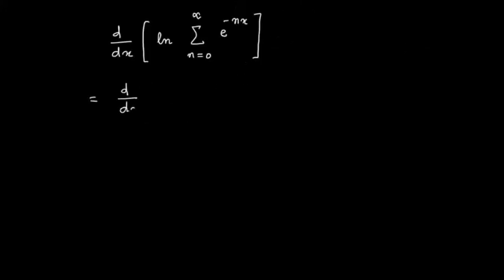Now here I can break out this summation, so I have log and then the summation can be broken out in one plus e to the minus x plus e to the minus x whole square, etc. Now this is one plus x plus x square plus x cube, which I can write as one by one minus x, so one by one minus e to the minus x.